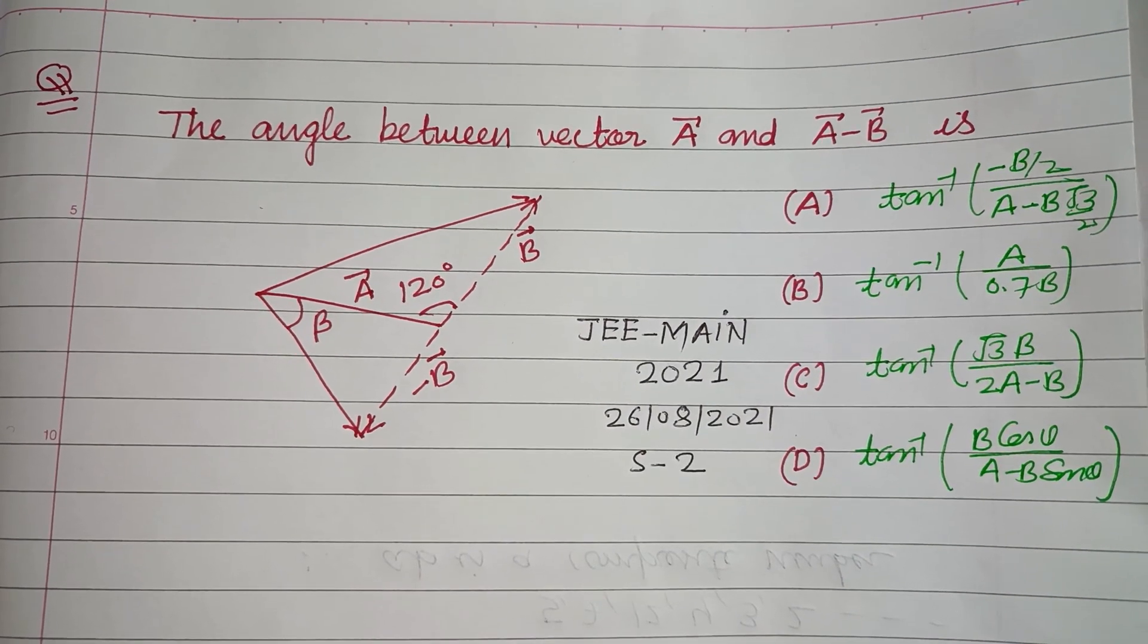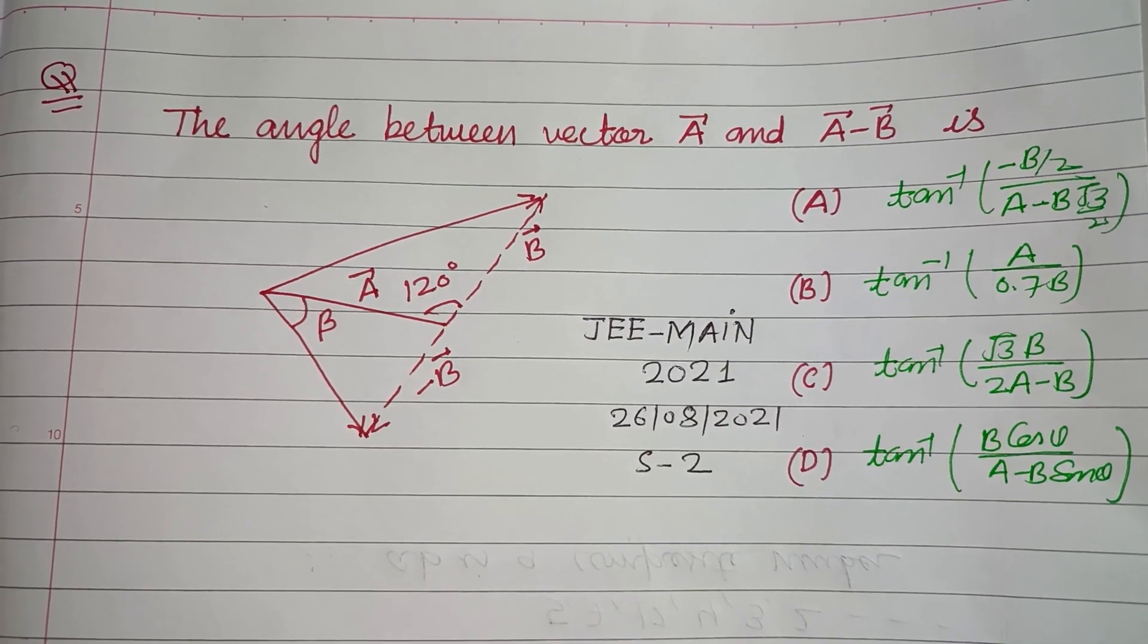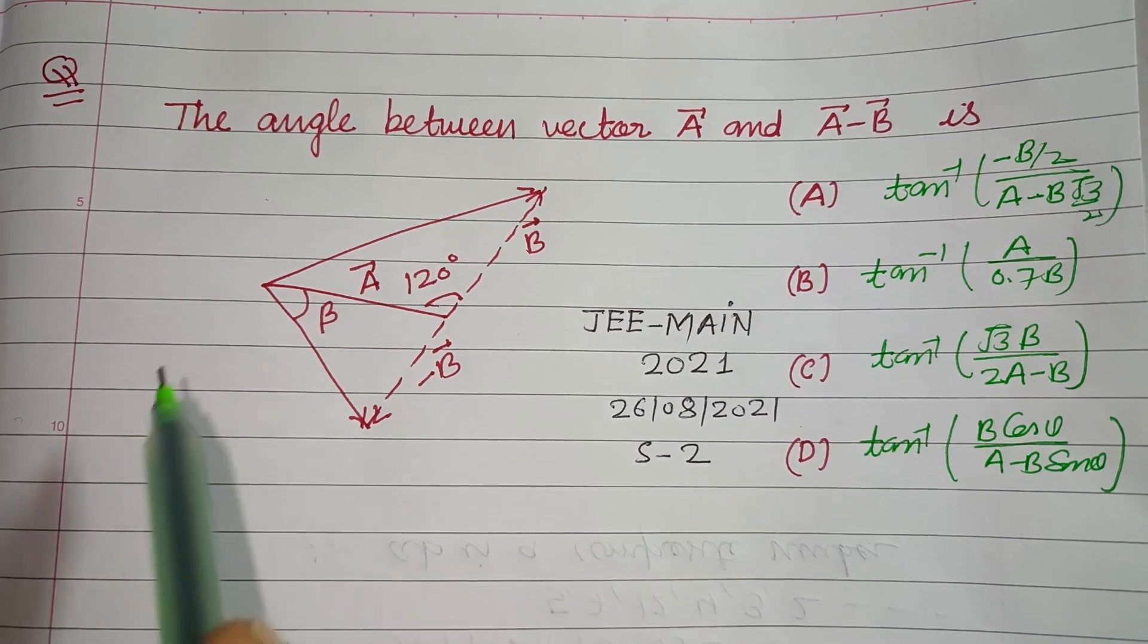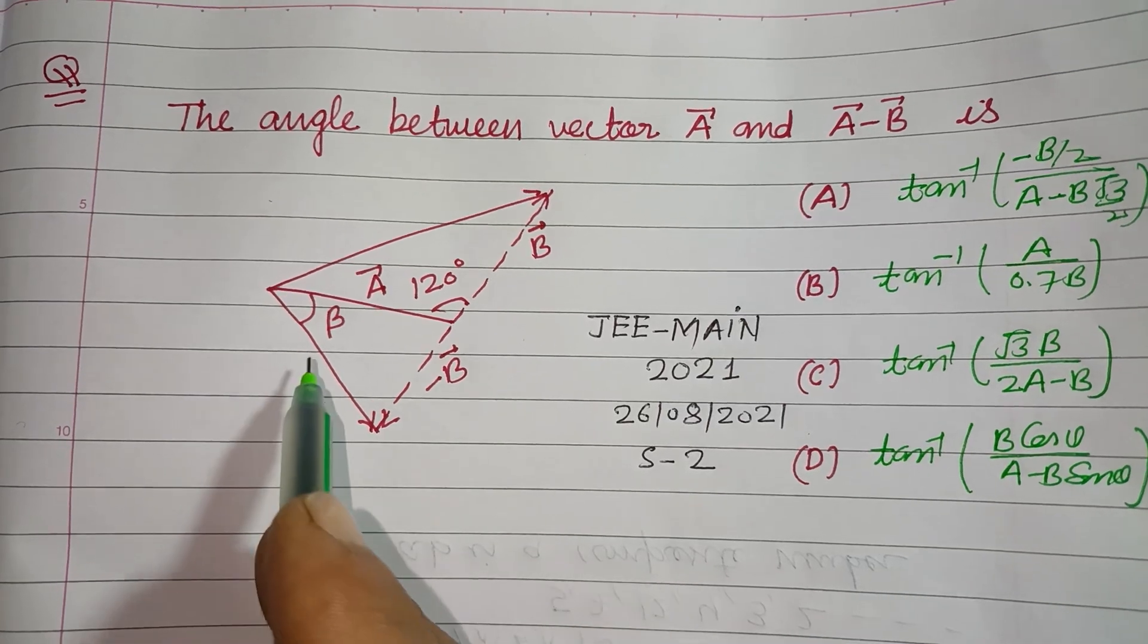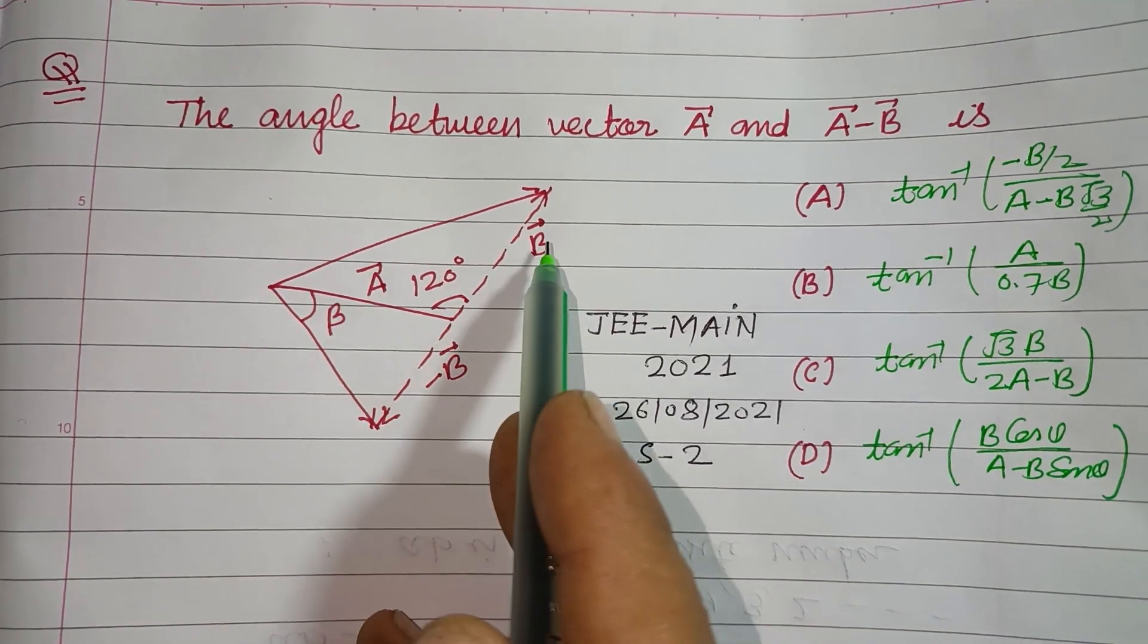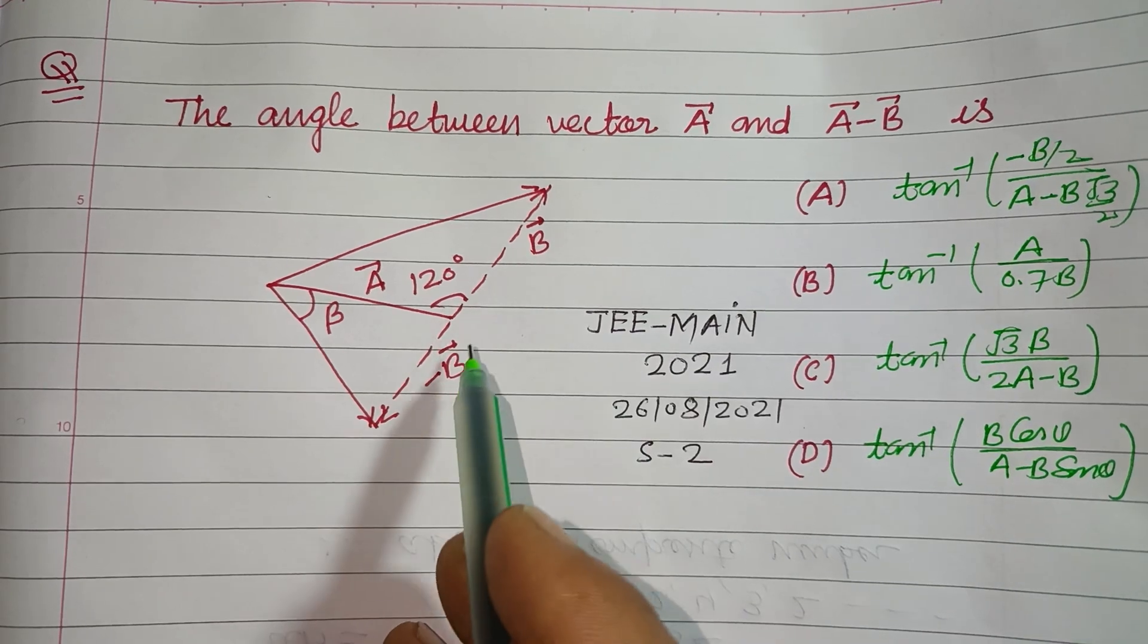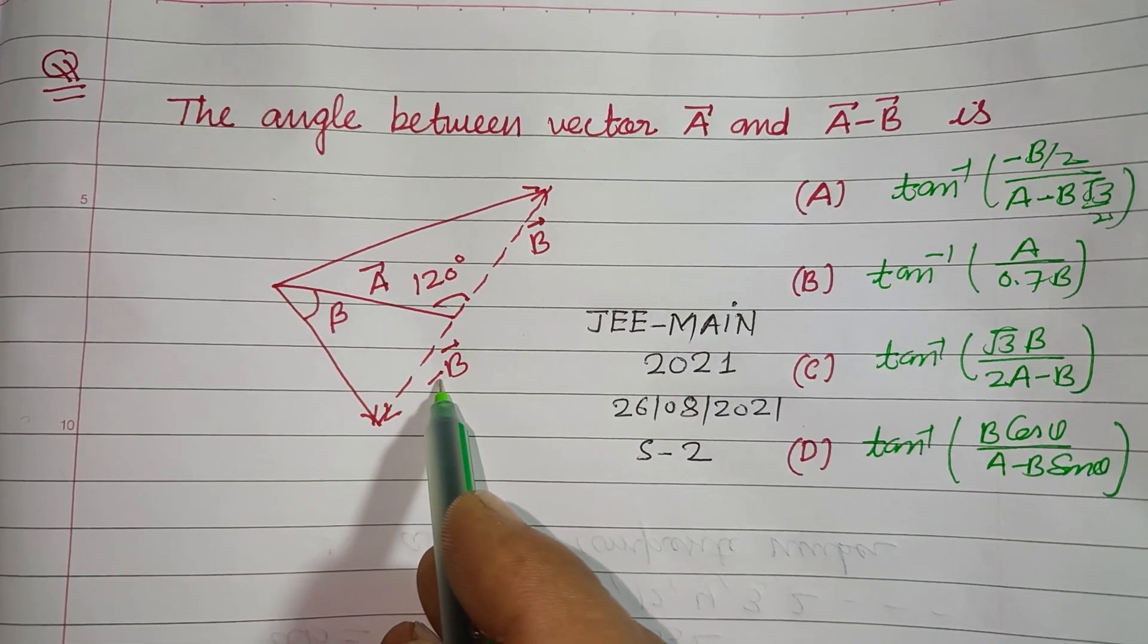Hello viewers, warm welcome to this YouTube channel. Question from JEE Main 2021: the angle between vector A and A minus B is. So students, here vector A is given, B is also given, and minus B is also given here.